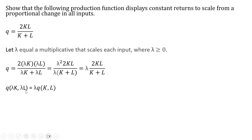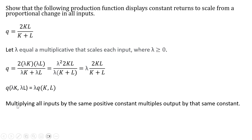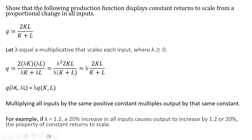So what we've just shown here is that this is a production function that displays constant returns to scale. Multiplying all inputs by the same positive constant multiplies output by that same constant. For example, if lambda equals 1.2, a 20 percent increase in all inputs causes output to increase by 1.2, or 20 percent — the property of constant returns to scale.